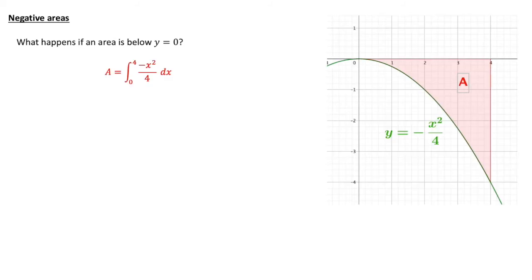We'll use our previous example but flipped. So instead of y equals x squared over 4, we've got y equals minus x squared over 4. Because it's a straight reflection, we know what we expect this area to be. So let's just go through the process and have a look at what actually happens.